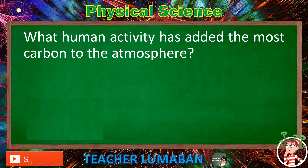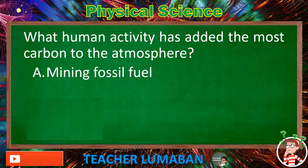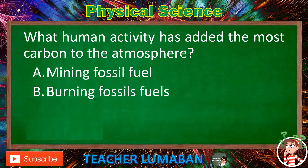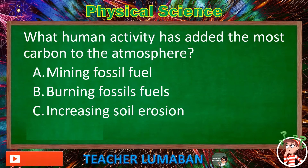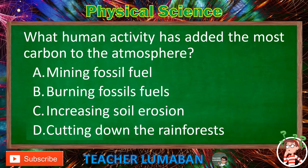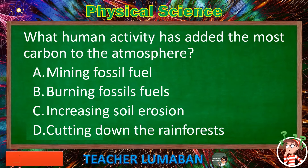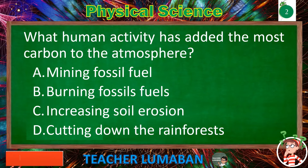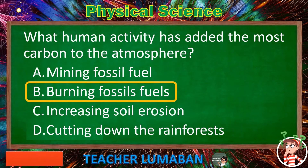What human activity has added the most carbon to the atmosphere? Letter A: Mining fossil fuels. Letter B: Burning fossil fuels. Letter C: Increasing soil erosion. Letter D: Cutting down the rainforests. The correct answer is letter B, burning fossil fuels. The burning of fossil fuels is the human activity that has added the most carbon to the atmosphere.